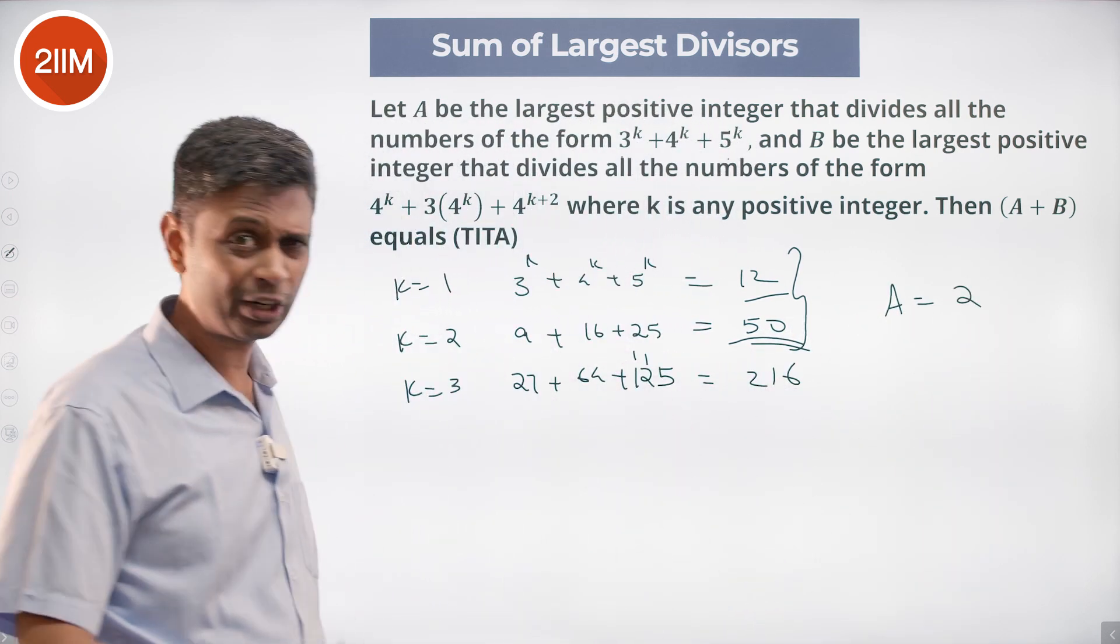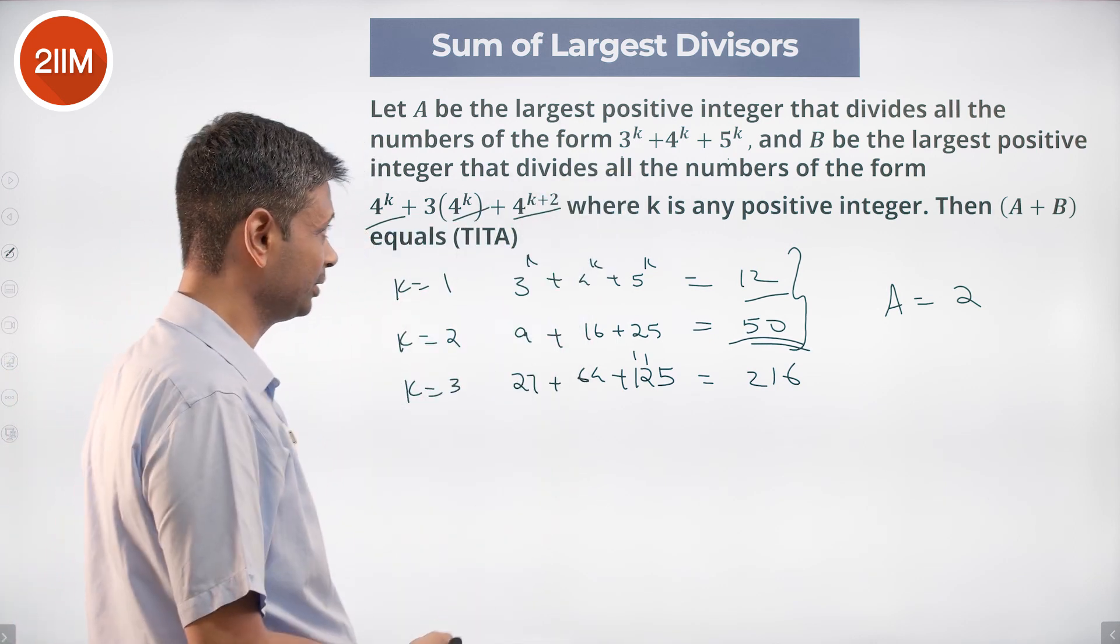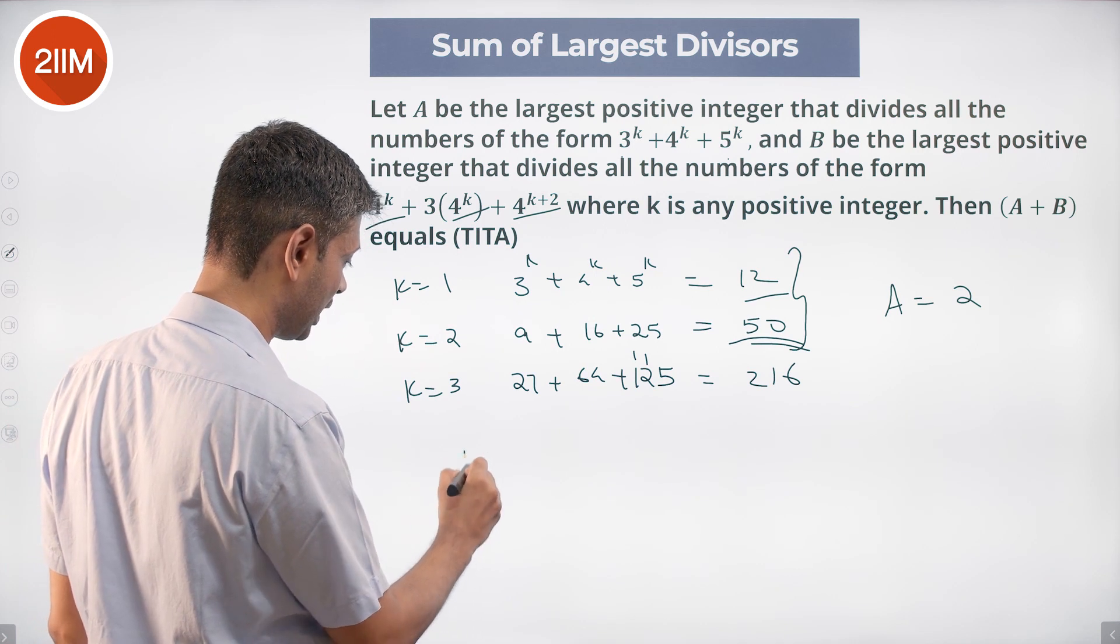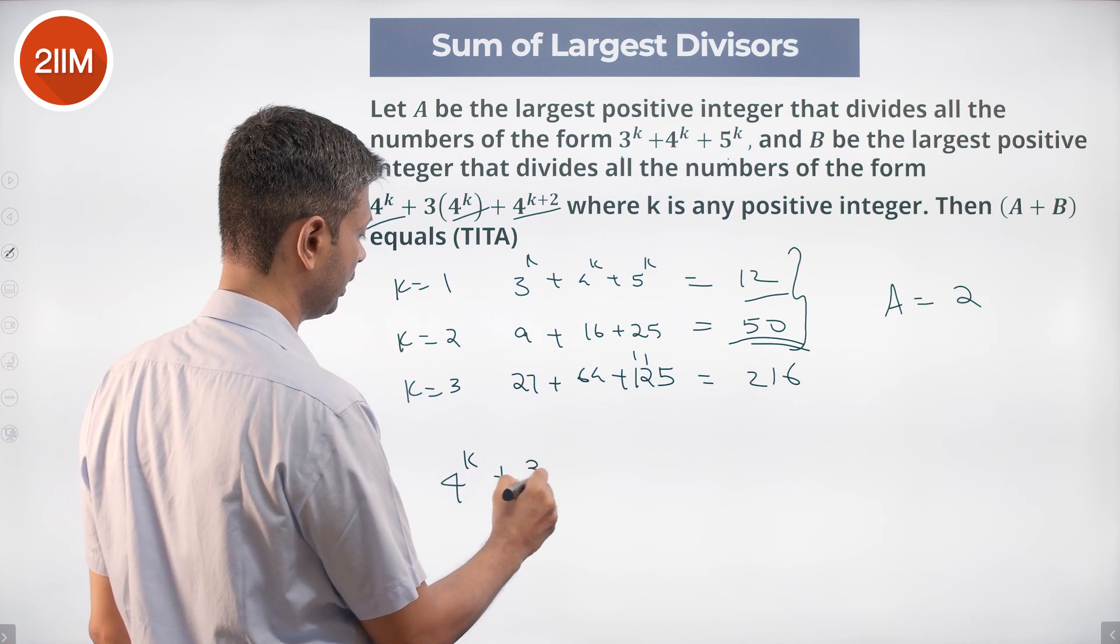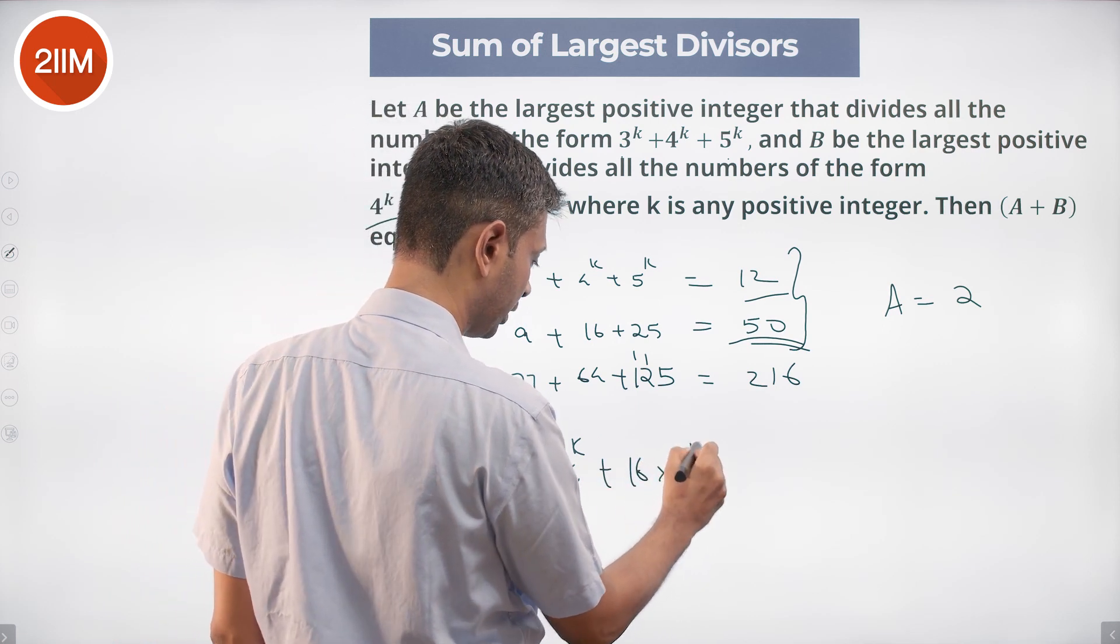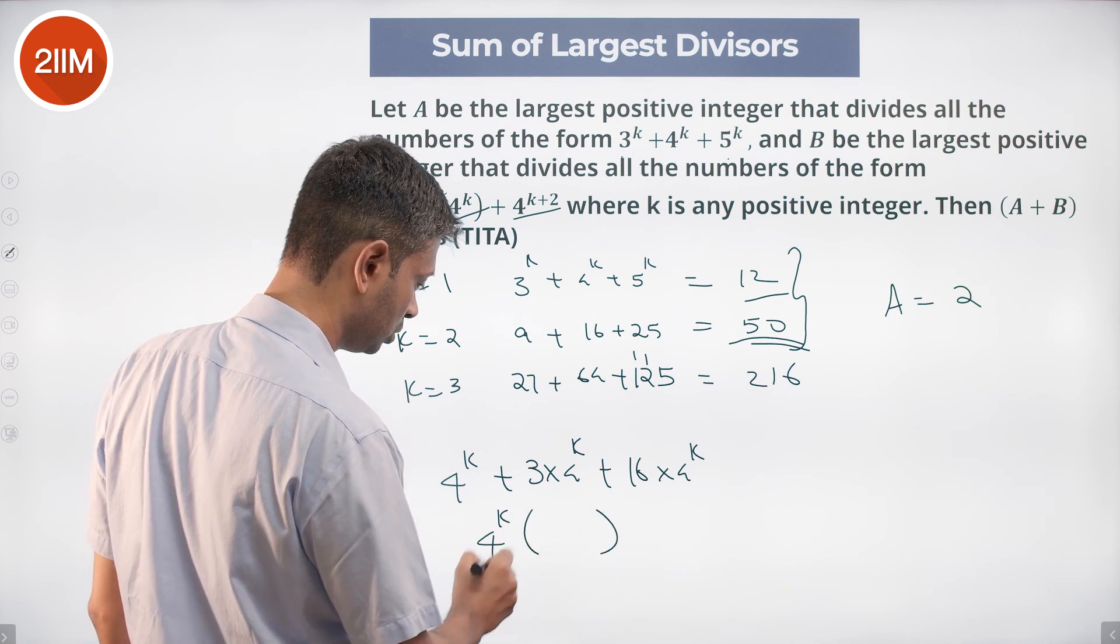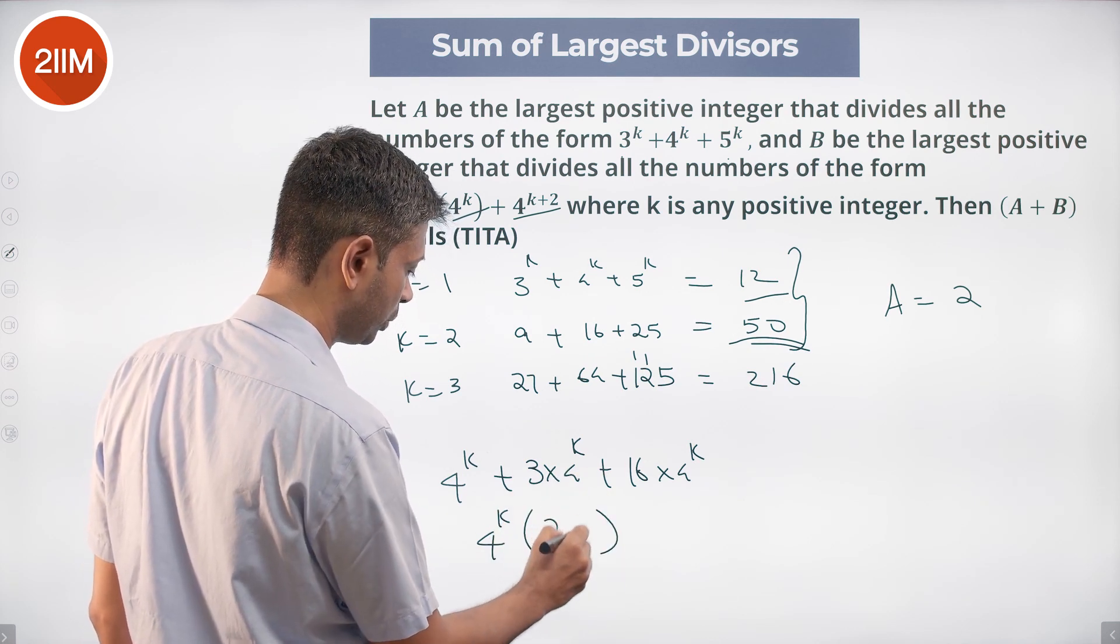Second one is more interesting because there is 4^k, 4^k and also 4^k into something. So we can extract a 4^k out, call it 4^k, 3 times 4^k + 16 times 4^k, or this is 4^k into 1 + 3 + 16 into 20.